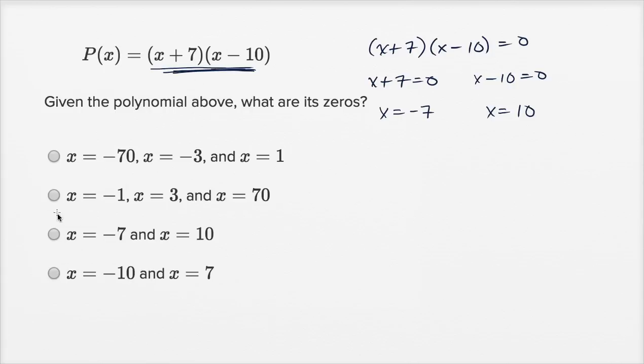So x is equal to negative seven, and x is equal to 10. Which is that choice. I wasn't able to circle it in on that choice right over there. x equals negative seven, and x is equal to 10.